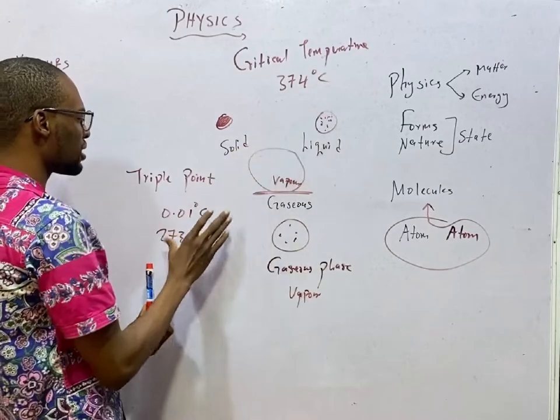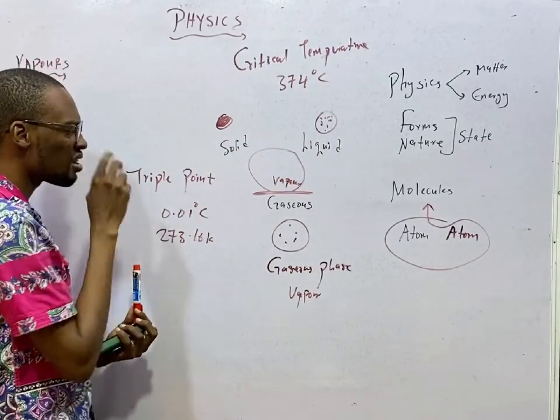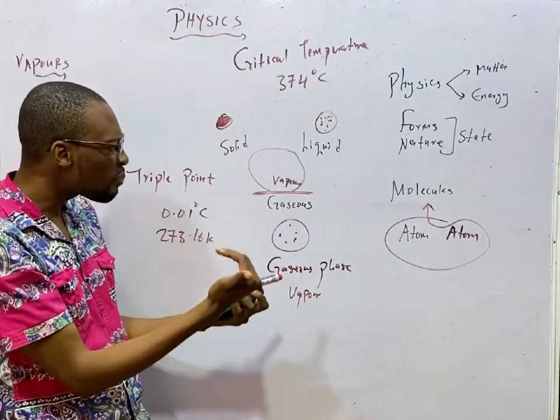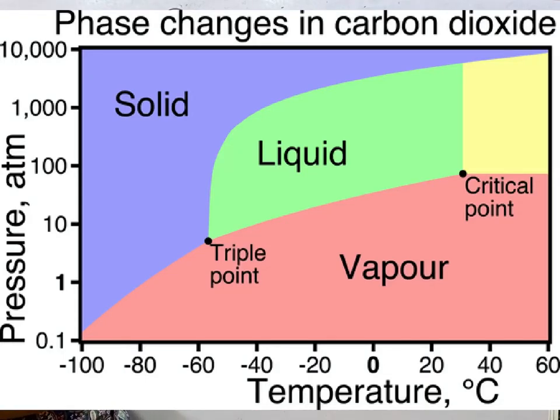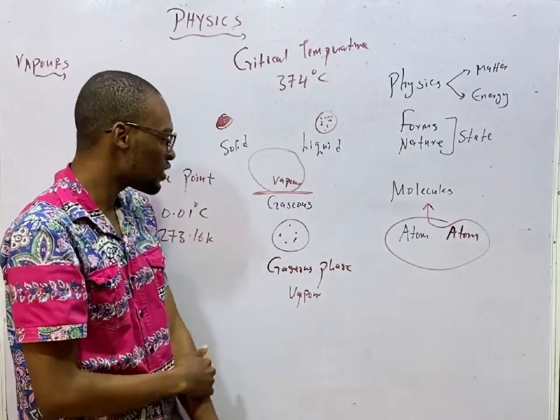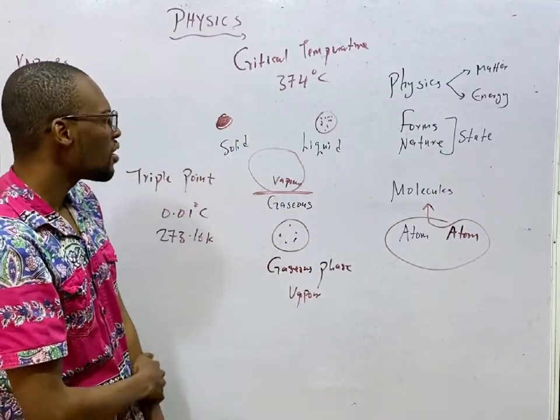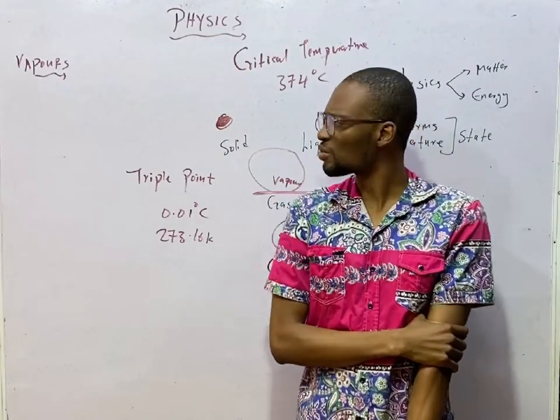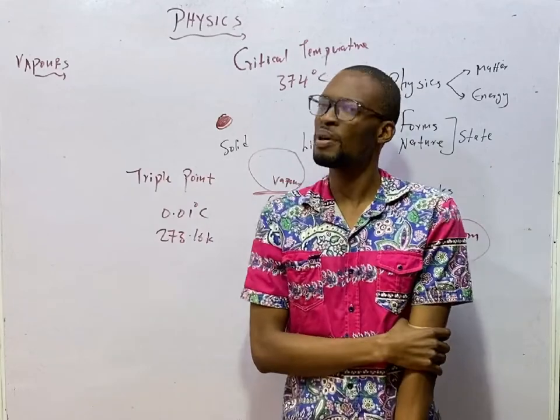Look at something very important. If this is critical temperature, and this is triple point, vapor exists at a temperature below the critical temperature. For there to be vapor, there should also be the liquid form of that substance. The gas that is in equilibrium with a liquid at a temperature below critical temperature is referred to as vapor. There is something called vapor pressure, saturated vapor, unsaturated vapor, and every other thing you need to know about vapor.